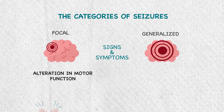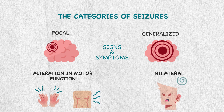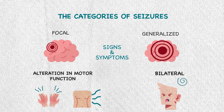Symptoms depend on the seizure type and location. In focal seizures, the patient will experience alteration in motor function, including jerking and twitching on one side of the body, and sensory symptoms like tingling and numbness. In generalized seizures, motor symptoms will be bilateral and associated with loss of consciousness, and it might proceed with aura symptoms.